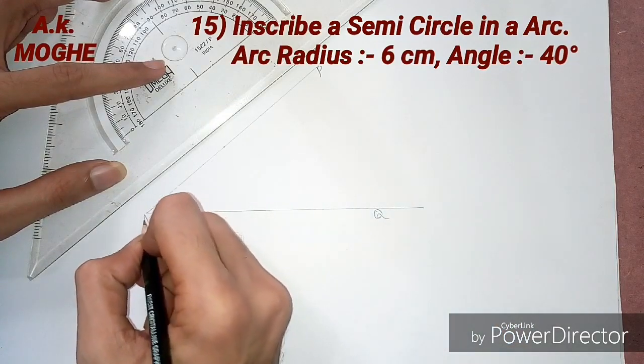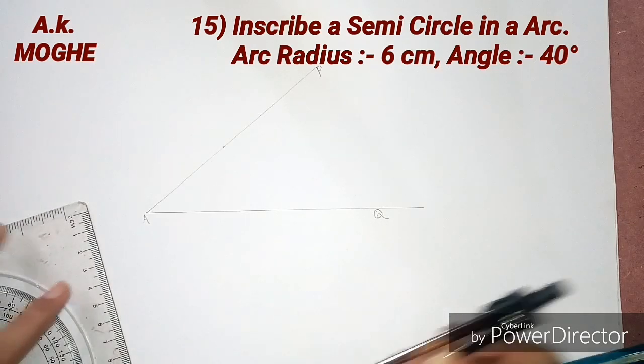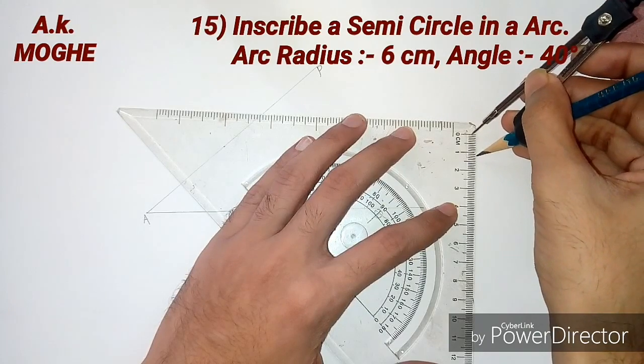I am giving naming as PQR. Then I will take a 6 centimeter arc radius into compass and mark arc from point A.